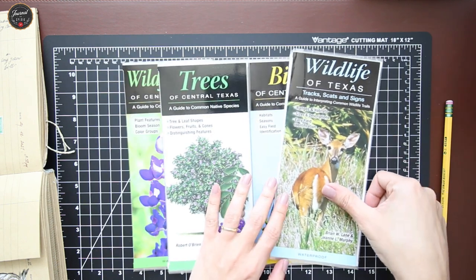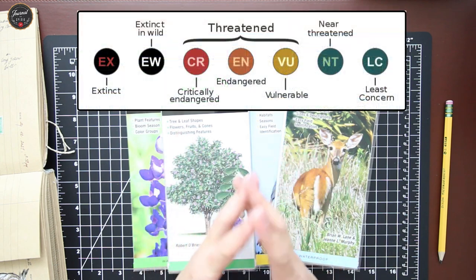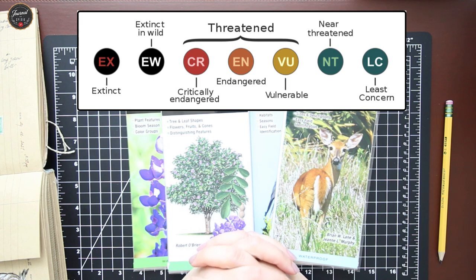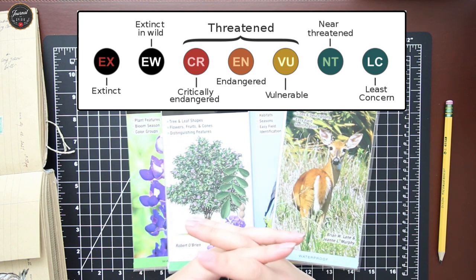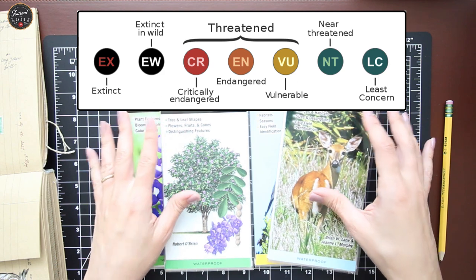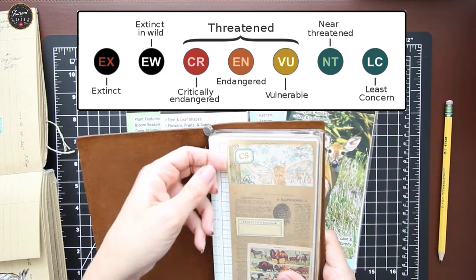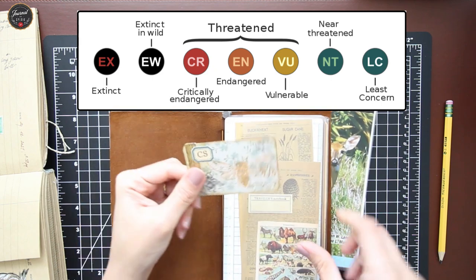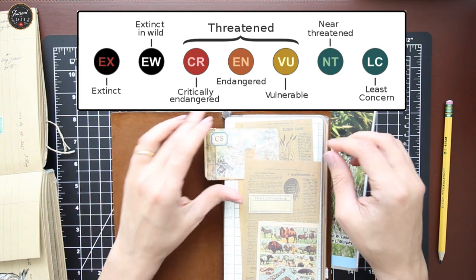There are also conservation status abbreviations, which basically describe how endangered a species or bird is from existence, and that too can be added. I have it ready to be printed and I will glue it at the back of this card so I will always have it as a reference in my ready-to-go journal.